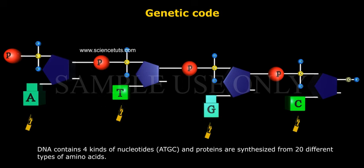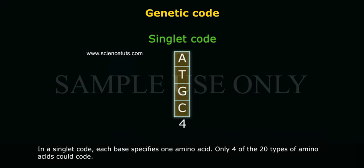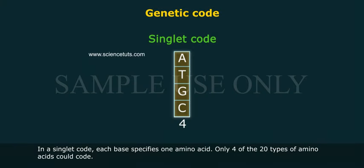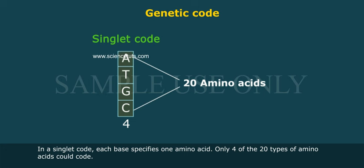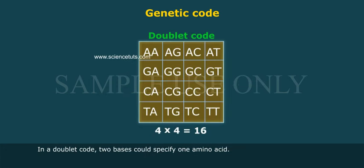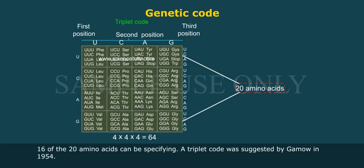DNA contains four kinds of nucleotides — A, T, G, C — and proteins are synthesized from 20 different types of amino acids. In a singlet code, each base specifies one amino acid, so only four of the 20 types of amino acids could be coded. In a doublet code, two bases could specify one amino acid, allowing 16 of the 20 amino acids to be specified.